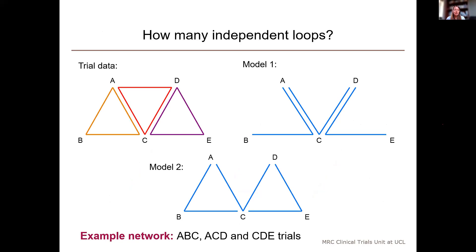I'm now going to show you a second example of another network where the number of loops depends on the parameterization because there are multi-arm trials. Here, I've assumed that we have three different three-arm trials, one comparing A, B and C, one comparing A, C and D, and one comparing C, D and E. And I have to admit that this is quite a strange example which we probably wouldn't expect to see in practice with there being no pairwise trials at all comparing those treatments. So, the figure on the top left shows the trial data and the two blue figures show two different ways of fitting a network meta-analysis model.